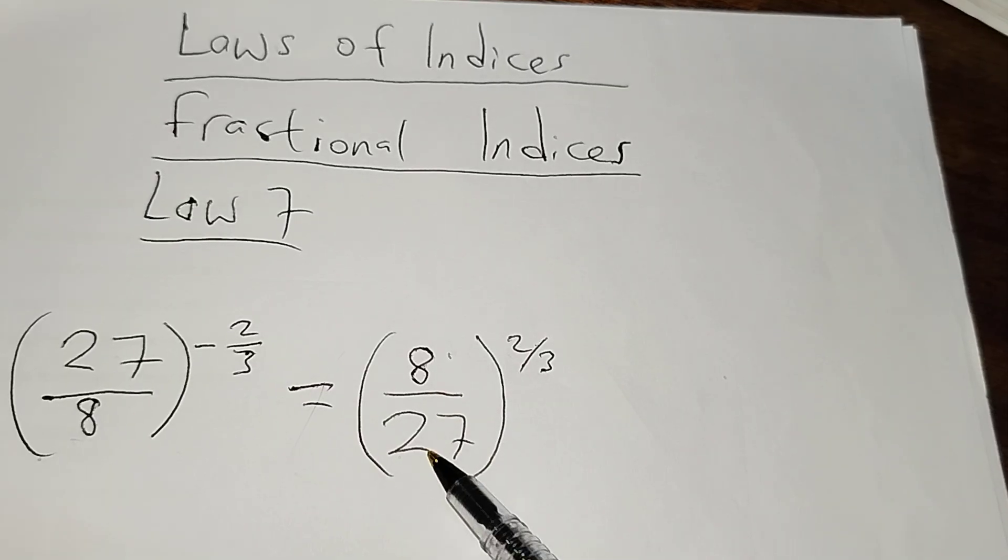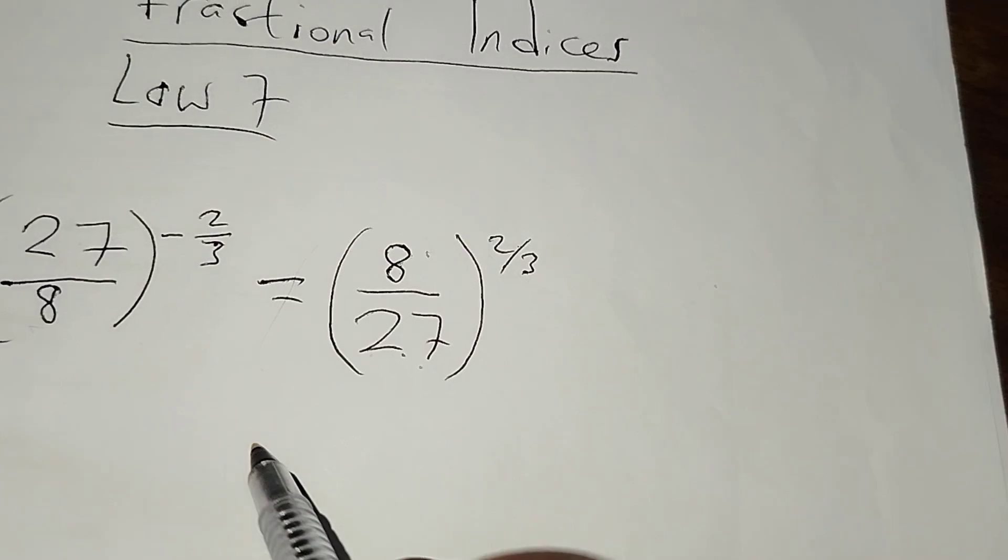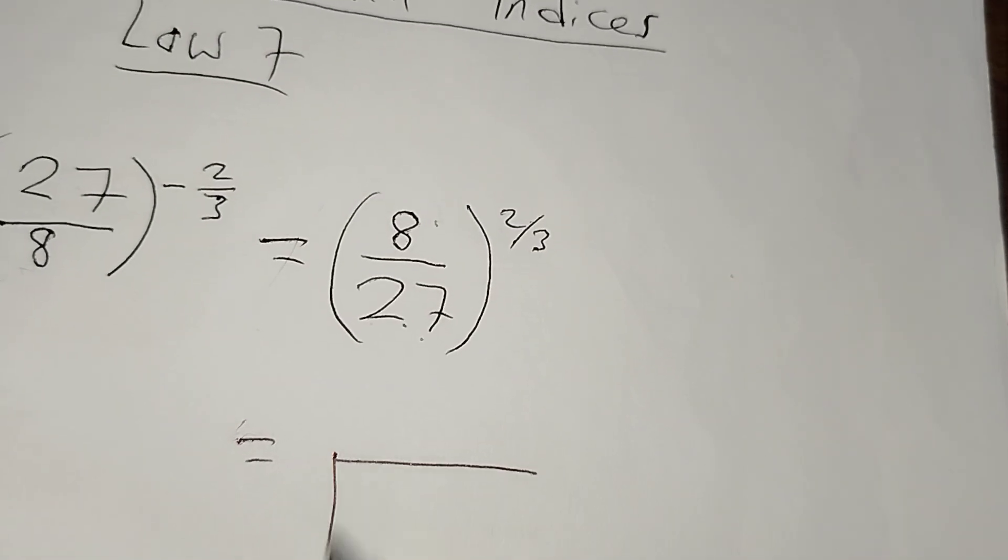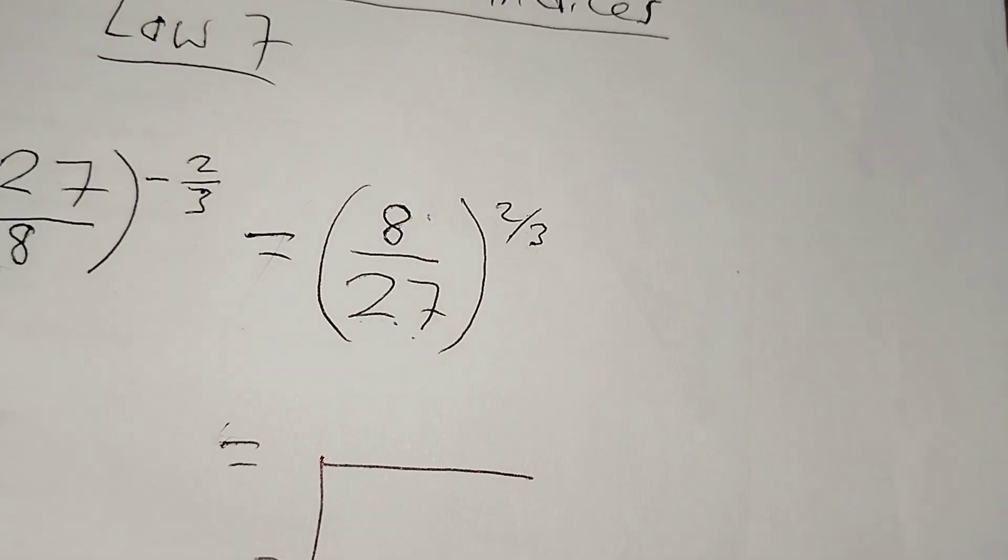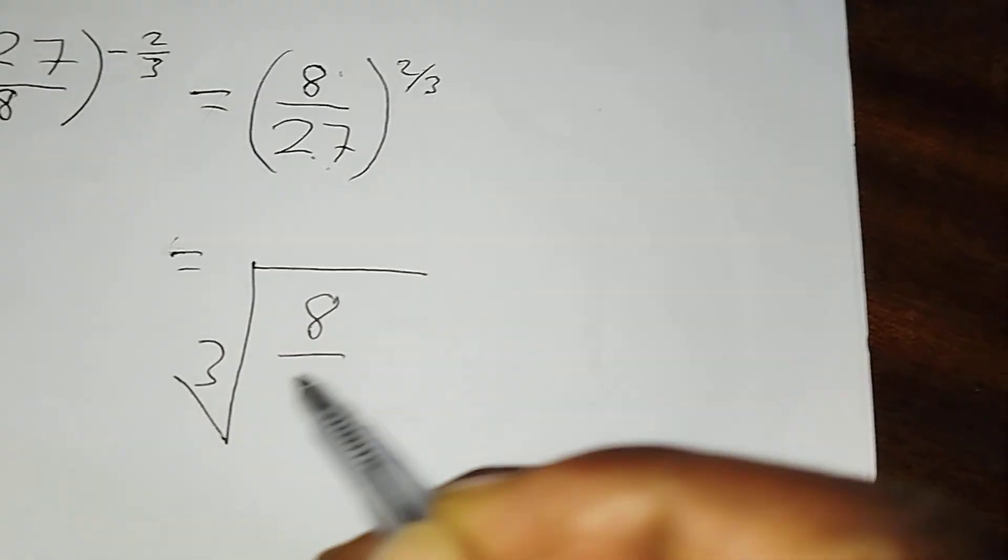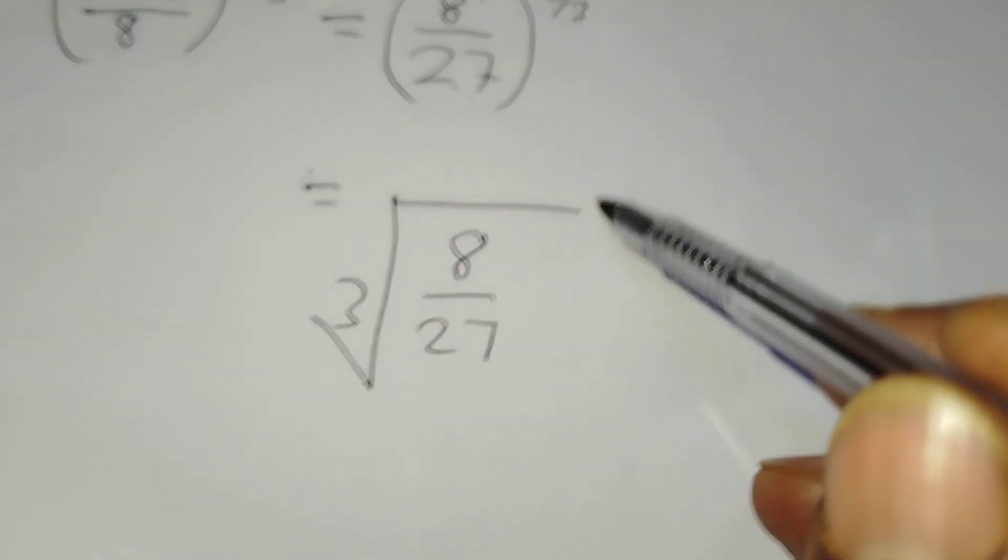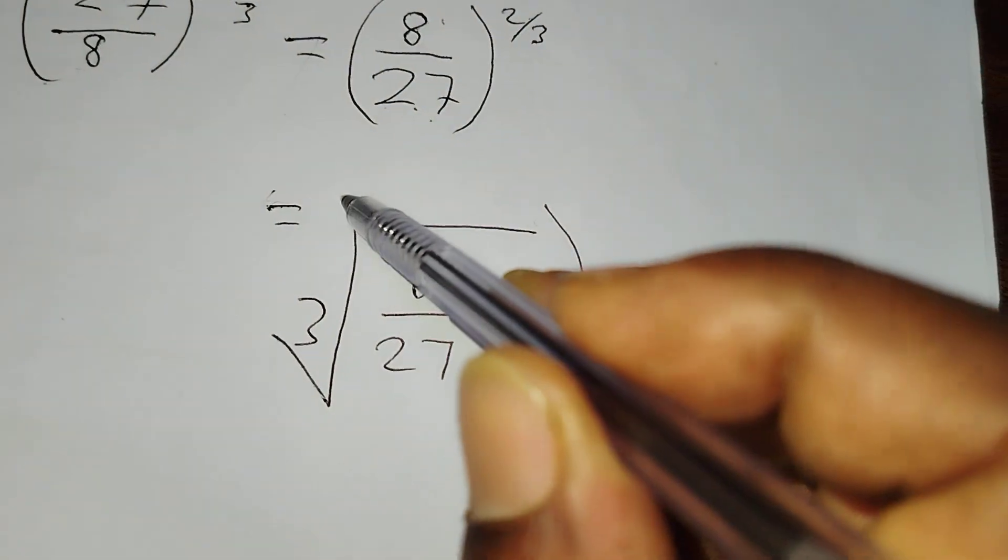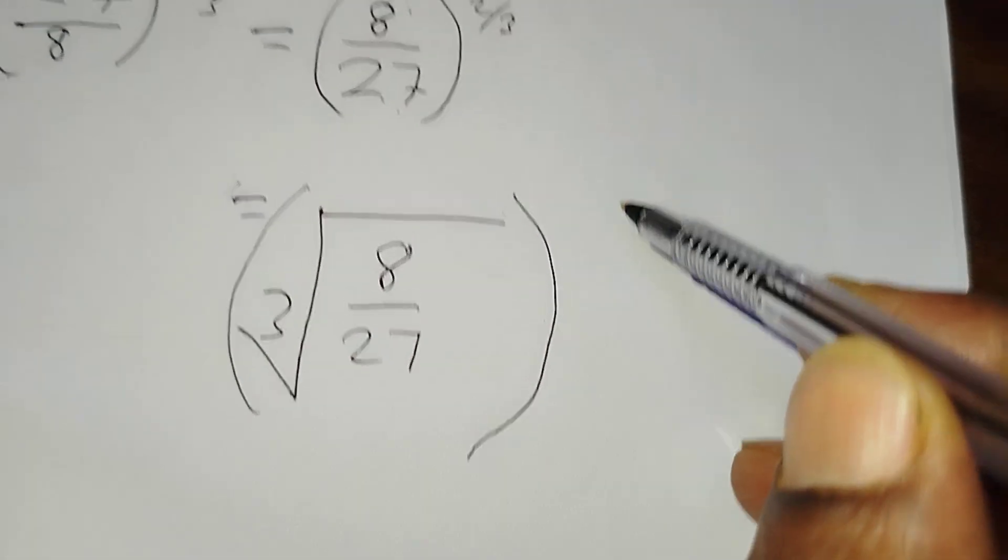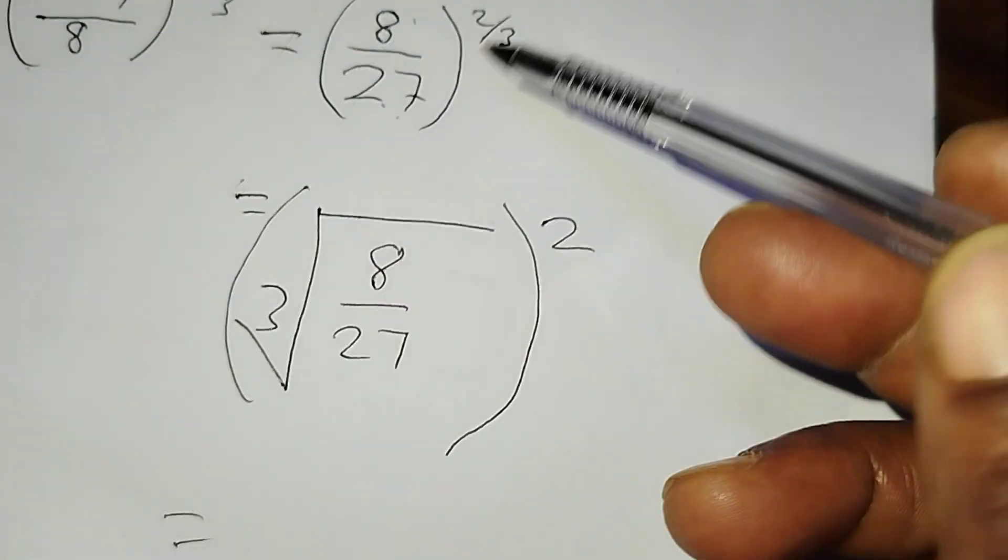So I can write like this and put the 3 here, then 8 over 27, and then enclose all these in the bracket raised to the power 2. So this is just an alternative way of writing the same thing here.